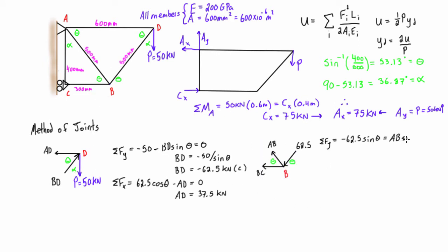So let's go ahead and draw the free body diagram for the joint at B. We get AB is 62.5 kilonewtons in tension, and then BC is negative 75 kilonewtons in compression, so again we can just switch that direction there.